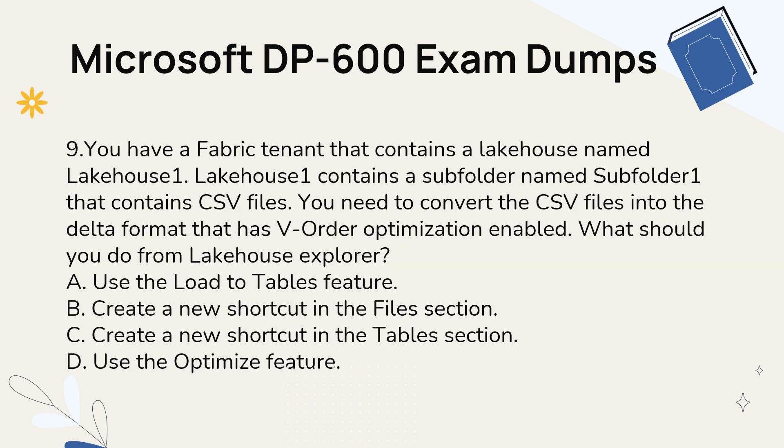Question 9. You have a Fabric tenant that contains a LakeHouse named LakeHouse 1. LakeHouse 1 contains a subfolder named Subfolder 1 that contains CSV files. You need to convert the CSV files into the Delta format that has V-Order optimization enabled. What should you do from LakeHouse Explorer? A. Use the Load to Tables feature. B. Create a new shortcut in the Files section. C. Create a new shortcut in the Tables section. D. Use the Optimize feature.